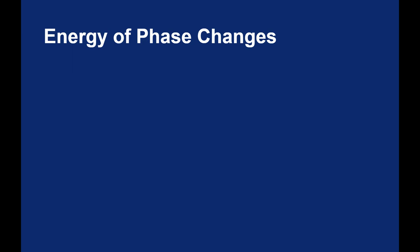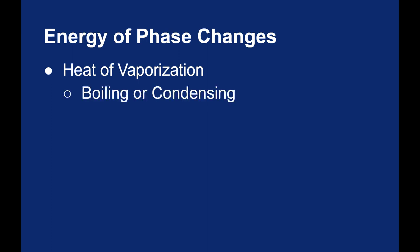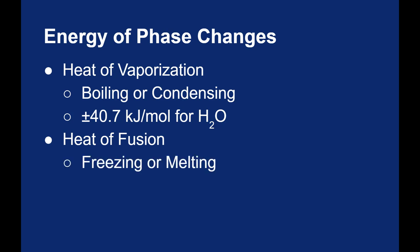The energy associated with these phase changes have names. The heat of vaporization is the heat of the boiling process — it can also be the heat of the condensing process, depending on whether you're adding or removing heat. For water, the heat of vaporization is 40.7 kilojoules per mole: positive 40.7 kJ/mol if you are boiling water (endothermic), and negative 40.7 kJ/mol if water is condensing. The heat of fusion for water is the energy associated with either melting or freezing: 6.02 kilojoules per mole — positive if melting (endothermic), and negative if freezing (exothermic).